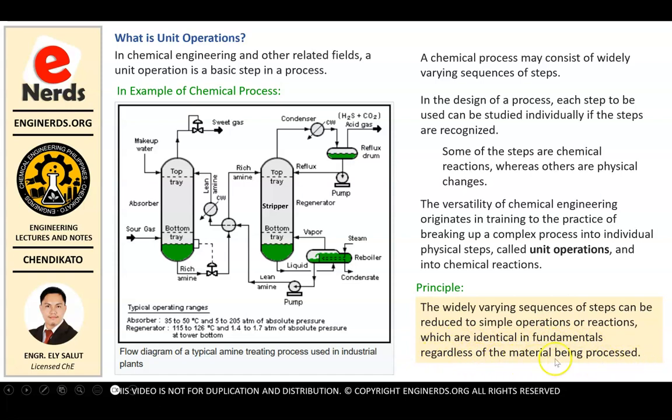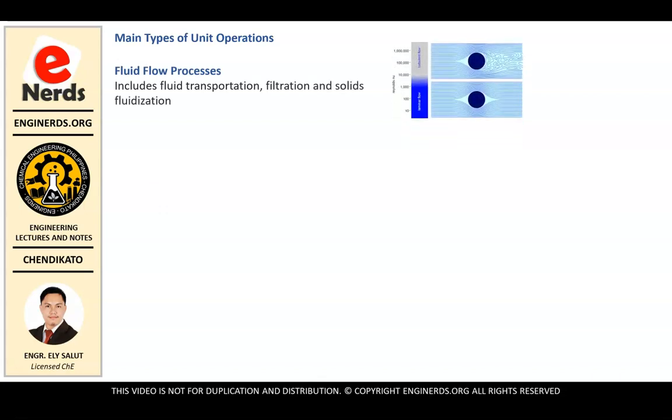Let us consider these main types of unit operations. First we have the fluid flow processes which includes fluid transportation, filtration and solids fluidization. Here we study the flow of fluids in the process. To visualize, for example, you will be taking a shower on the second floor of your house. Basically you need to pump the water from the ground floor up to the second floor where you will shower. There is a unit operation involved there in pumping and in the transportation of fluid.